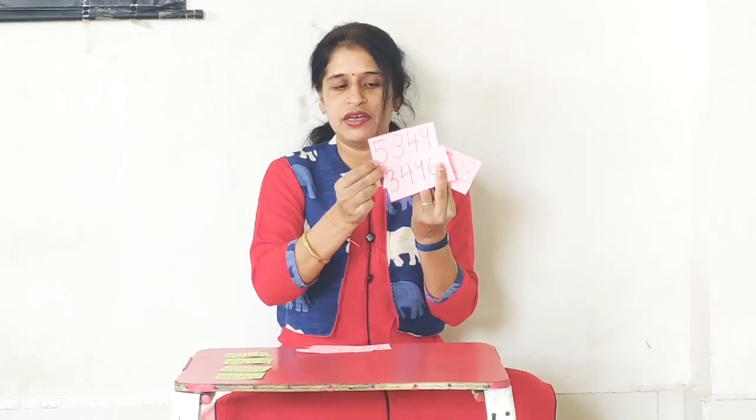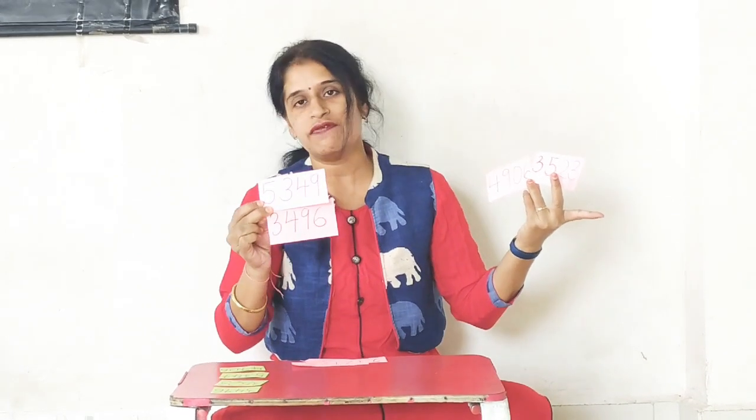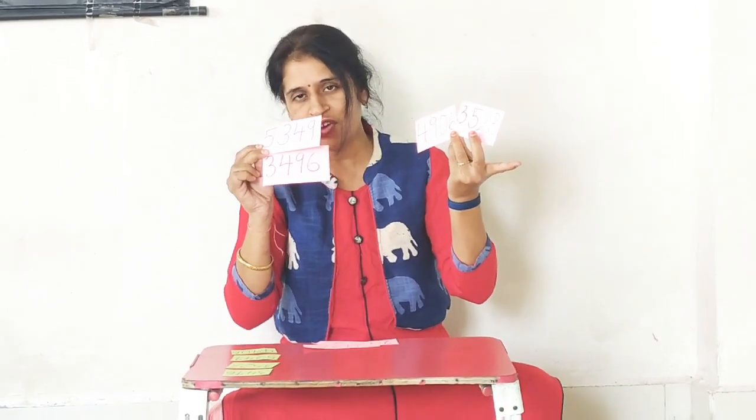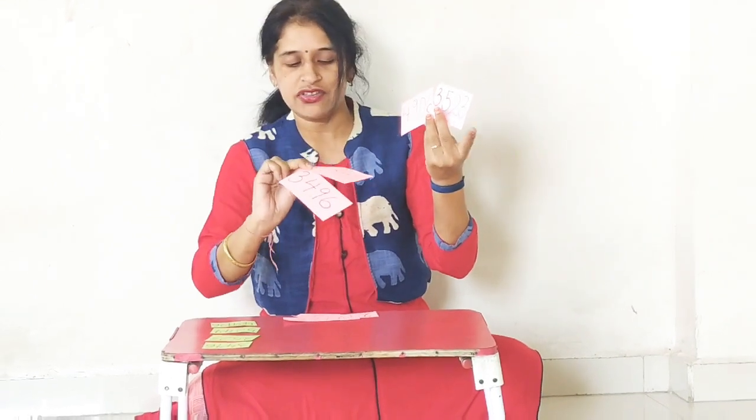These are the 4 numbers given to you. If you are asked to arrange in ascending order, which one is the smallest number? All four are 4-digit numbers. Let's see the thousands place — two numbers start with 3, one number starts with 5, and one starts with 4. The numbers starting with 3 in the thousands place are smaller.